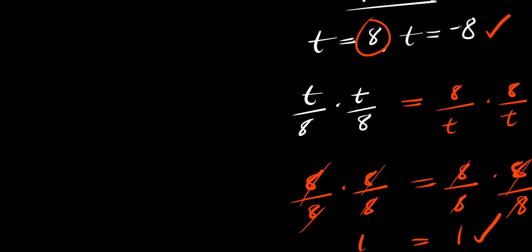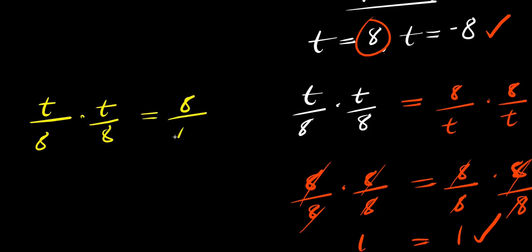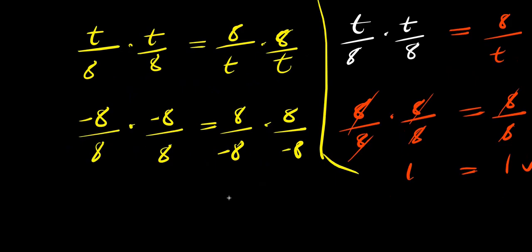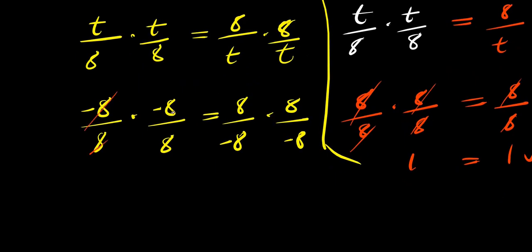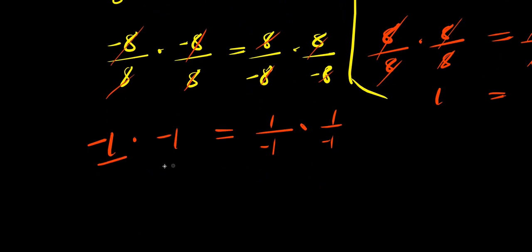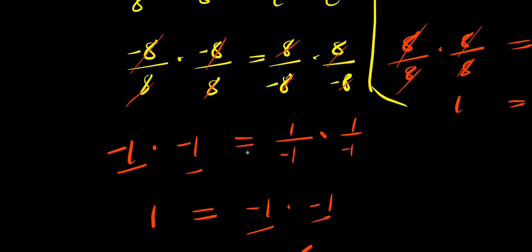For t equals negative 8, substituting gives (negative 8 over 8)(negative 8 over 8) on the left and (8 over negative 8)(8 over negative 8) on the right. On the left, negative 1 times negative 1 equals positive 1. On the right, (1 over negative 1)(1 over negative 1) equals negative 1 times negative 1, which is also positive 1. So we have 1 equals 1, and t equals negative 8 satisfies the equation.